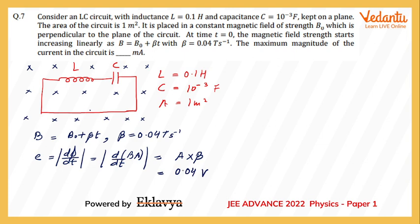So this much emf is going to be produced in the circuit. We can now consider the circuit as this, like we can draw an equivalent circuit. So we have a circuit with a battery, with an inductor, with a capacitor. Initially there is no current in the inductor, there is no charge on the capacitor. So that is the situation.